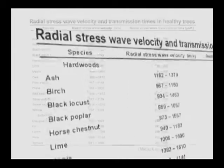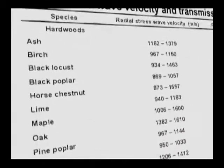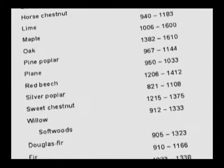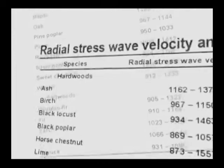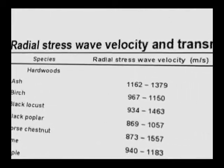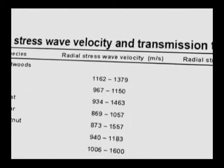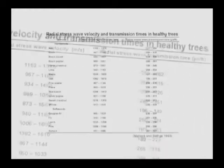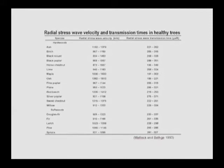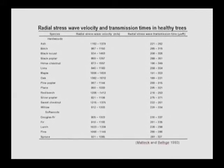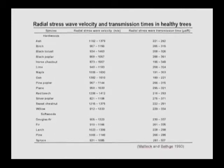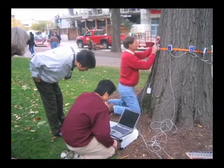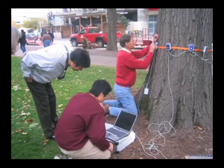Stress wave velocities of solid wood can vary due to moisture levels in tree-growing conditions. Therefore, it is important to conduct a self-reference test on a part of the tree or a comparable neighboring tree that is known to be sound. In this study, if the sampled cross-trunk section had a velocity reduction greater than 25% of the solid wood reference standard, it failed the screening test.